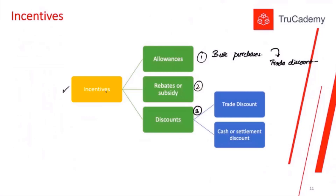Rebates or subsidy: sometimes a supplier tells the customer that if you buy a specific number of goods, we will decrease the price per unit. For example, for the first 100 units the supplier charges $5 per unit, then for 100+ units they charge $3.50 per unit, and so on — a tiered threshold for rebates or subsidy.